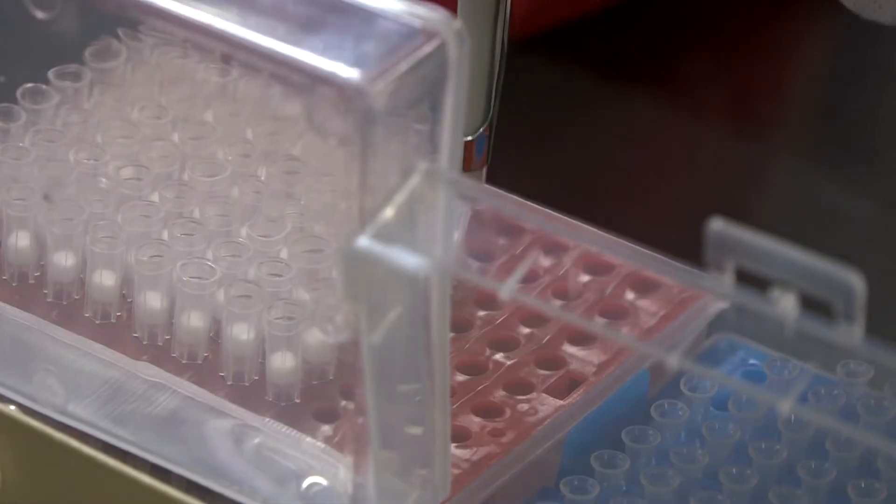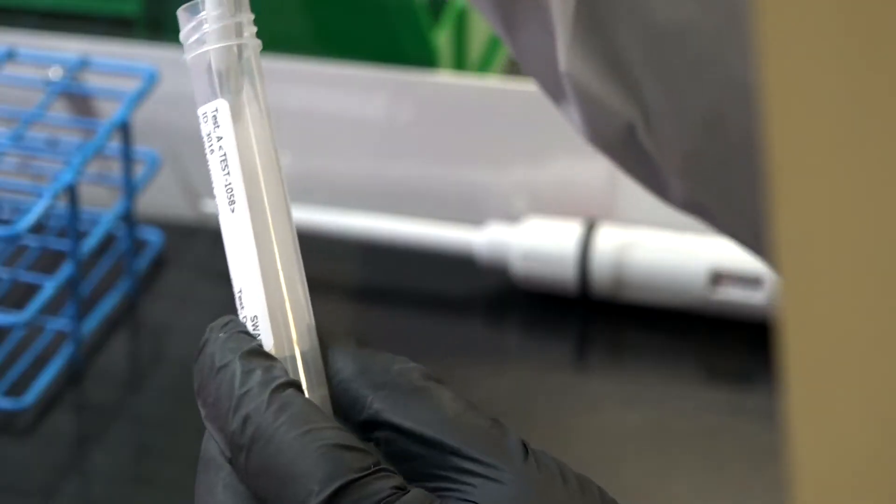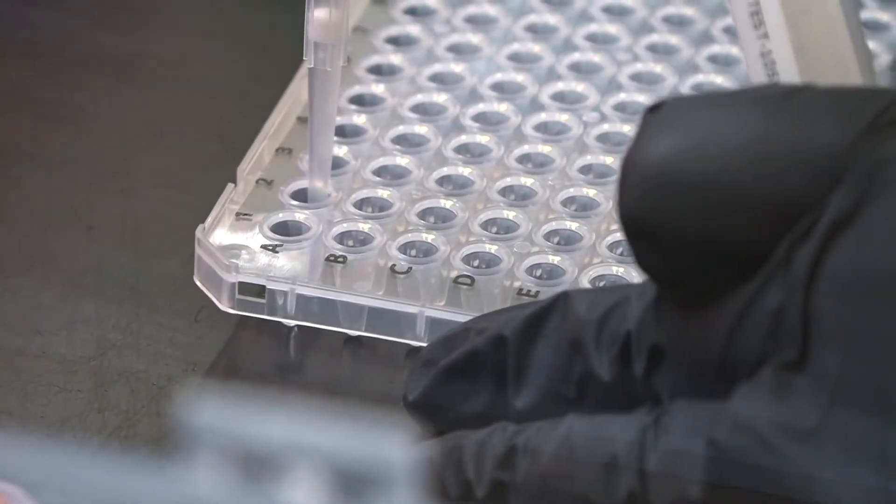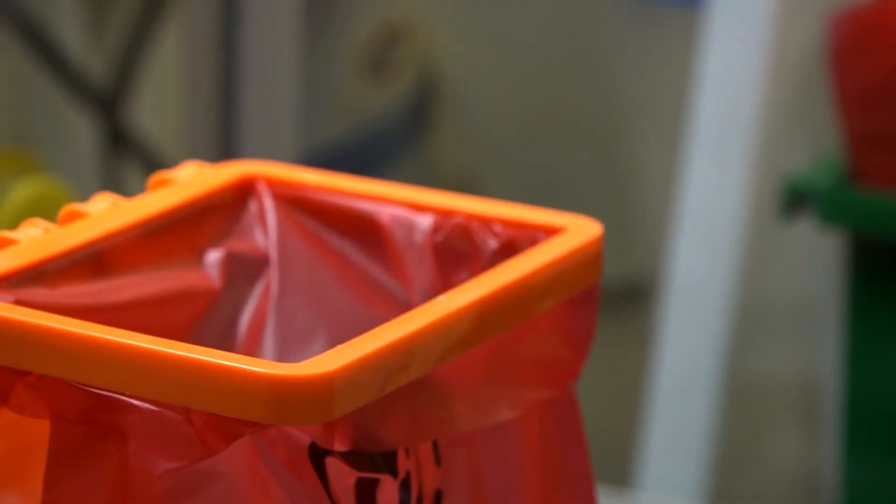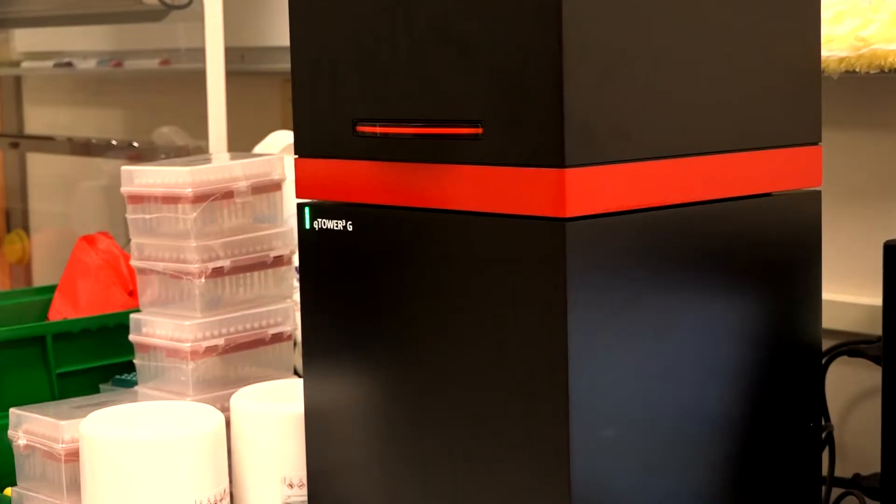Whether in large processing machines like this one or by hand, the samples are mixed carefully with certain chemicals and heated up. It's a process that makes the COVID-19 cells detectable while decontaminating the samples so they're safe to work with. Then it's analyzed.